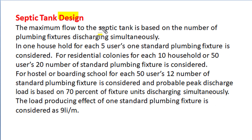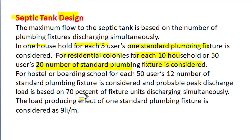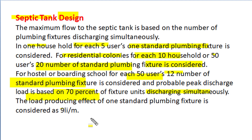The maximum flow to the septic tank is based on the number of plumbing fixtures discharging simultaneously into the septic tank. For one household, for each 5 users, one standard plumbing fixture is considered. For a residential colony, for each 10 households or 50 users, 20 number of standard plumbing fixtures is considered. For hostel or boarding schools, for each 50 users, 12 number of standard plumbing fixtures is considered with diversity in application. Probable peak discharge load is based on 70% of fixture numbers which will discharge simultaneously, and for each standard plumbing fixture, the load producing effect is considered as 9 litres per minute or 540 litres per hour.